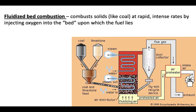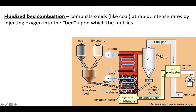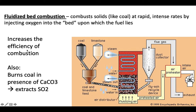Fluidized bed combustion: you burn coal in the presence of limestone, which helps capture some of the sulfur dioxide — it reacts with the limestone, which is basic, to help reduce the amount of acid. You also inject pure oxygen into the chemical reaction, which increases the efficiency of combustion. This leads to less carbon monoxide, less nitrous dioxide, and it also extracts sulfur dioxide.